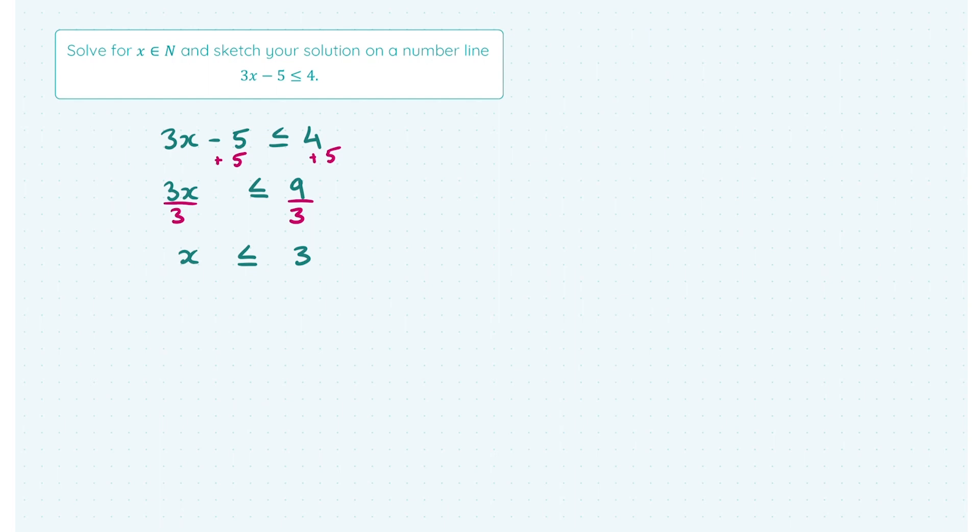So this means x, which is a natural number in the question, and the natural numbers are the positive whole numbers, excluding 0. So x ≤ 3. Now I want you to think of the positive whole numbers that are less than or equal to 3, well you have 3, 2, and 1.